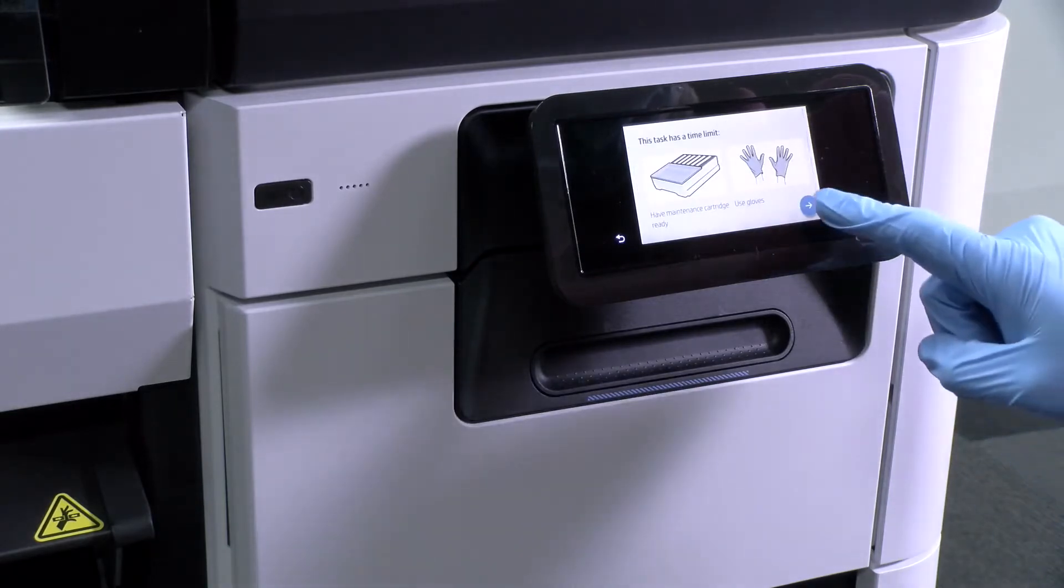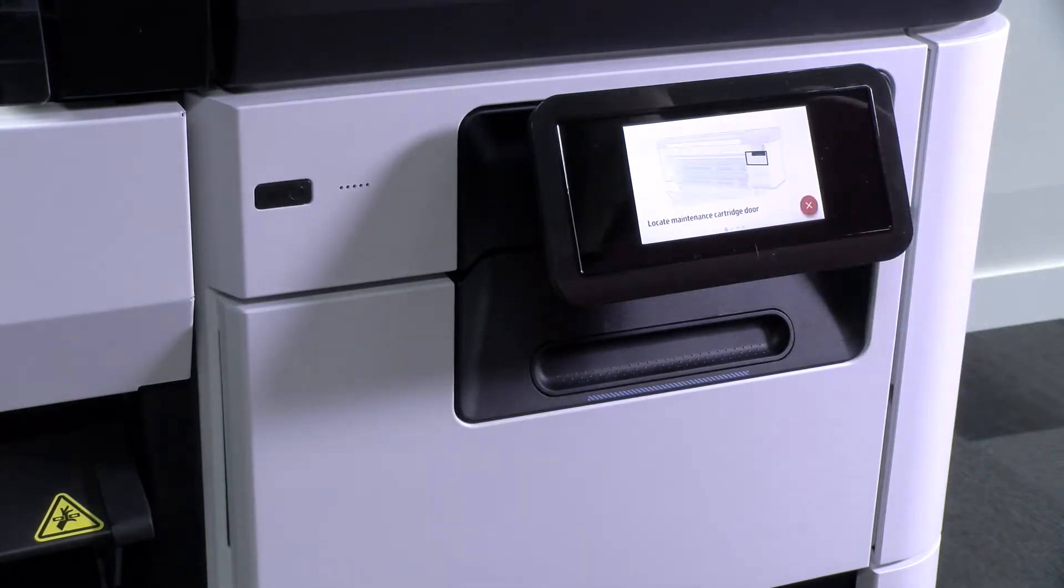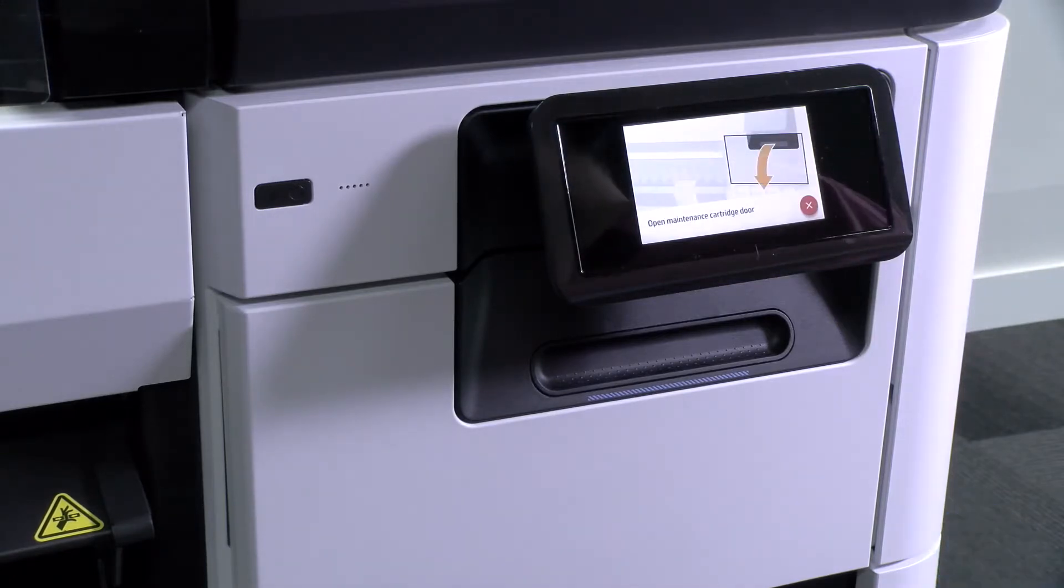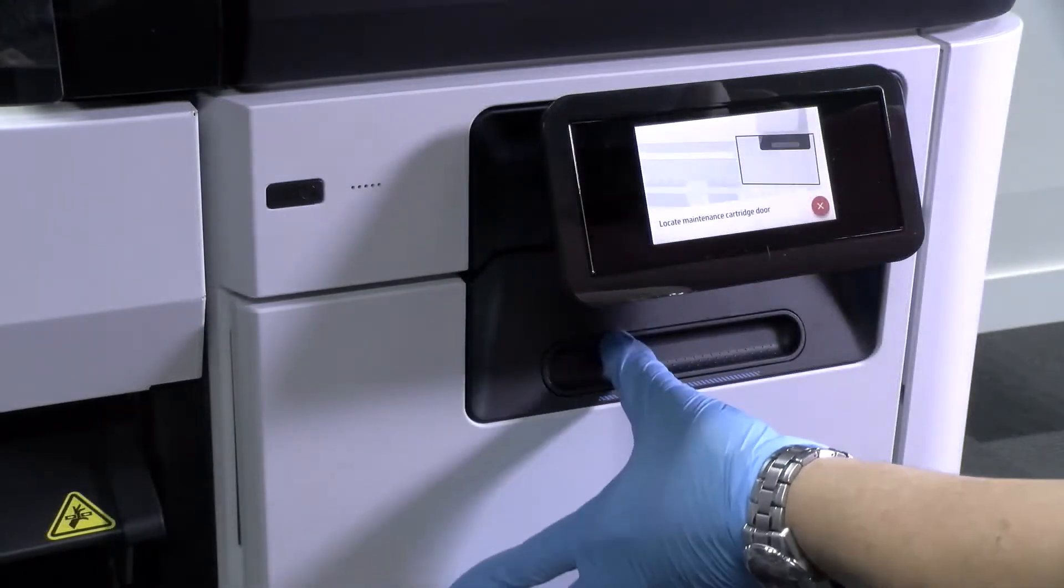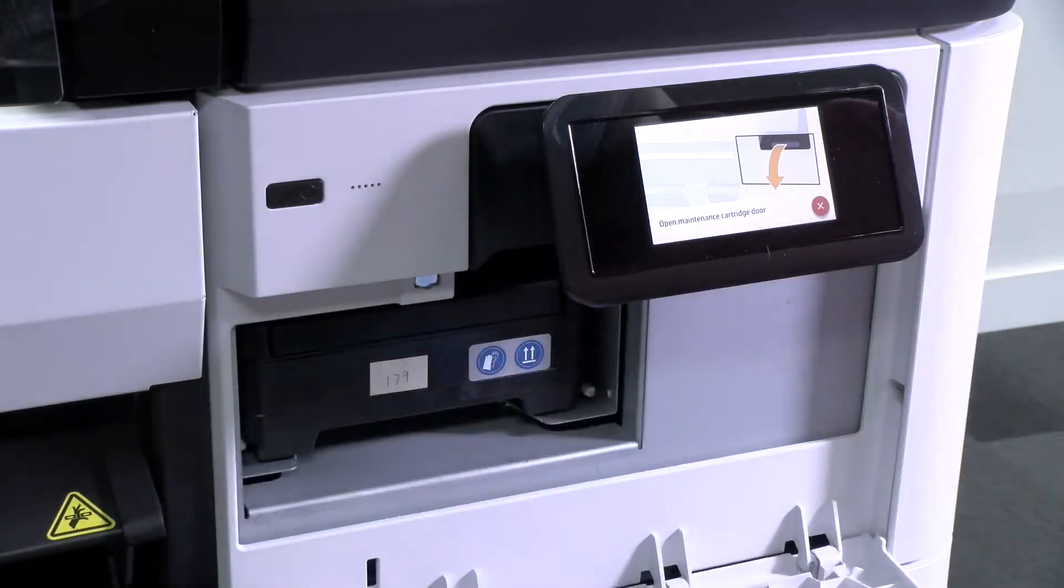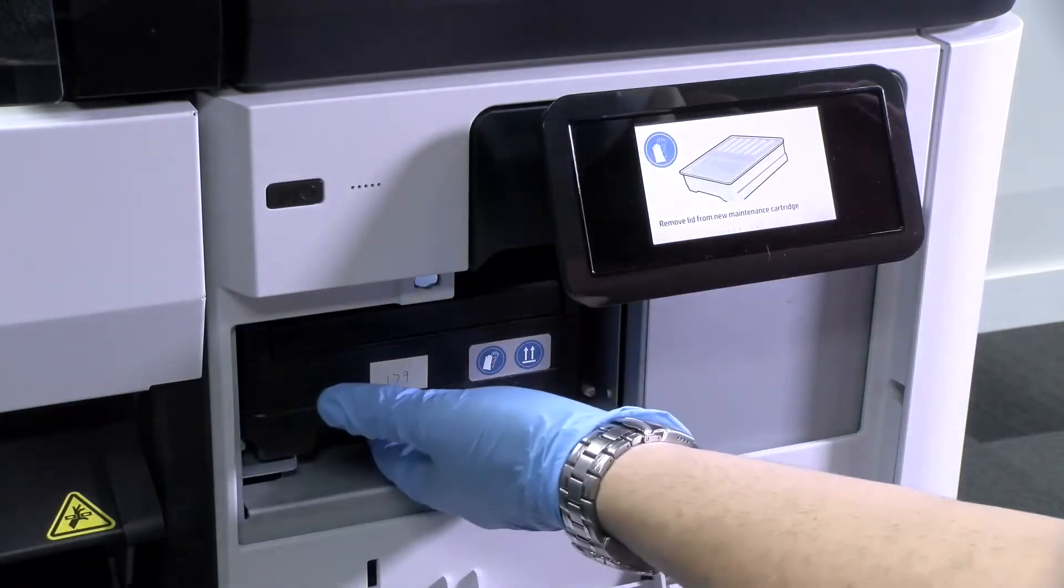The maintenance cartridge is located at the front of the printer in a slot underneath the front panel. Open the door. The maintenance cartridge has a handle on its front.